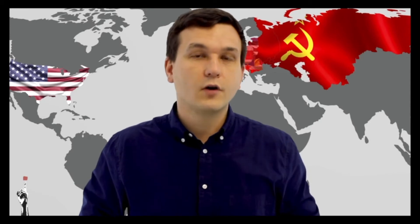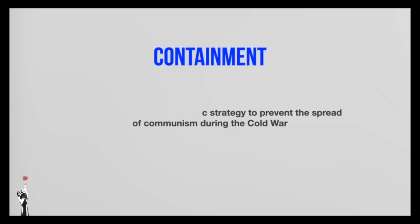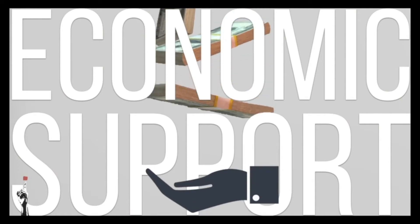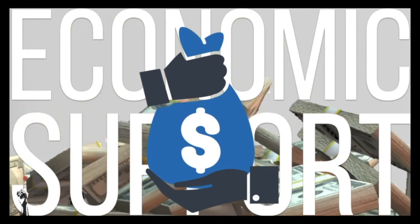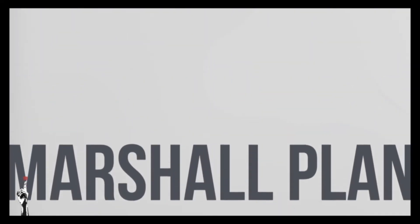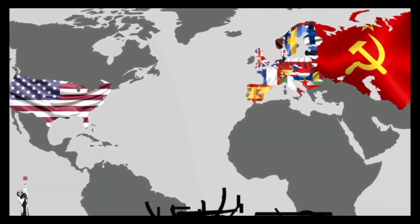So how did America respond to the threat of the spread of communism in Europe? They followed a policy of containment. Containment was the United States' diplomatic strategy to prevent the spread of communism during the cold war, and this strategy remained the central strategy from America's side throughout the whole cold war. They did it mainly through economic support, which brings us to the Marshall Plan. The Marshall Plan was an American program that provided support to countries devastated by the second world war. It was approved in 1948 and provided 15 billion dollars for countries to rebuild themselves.